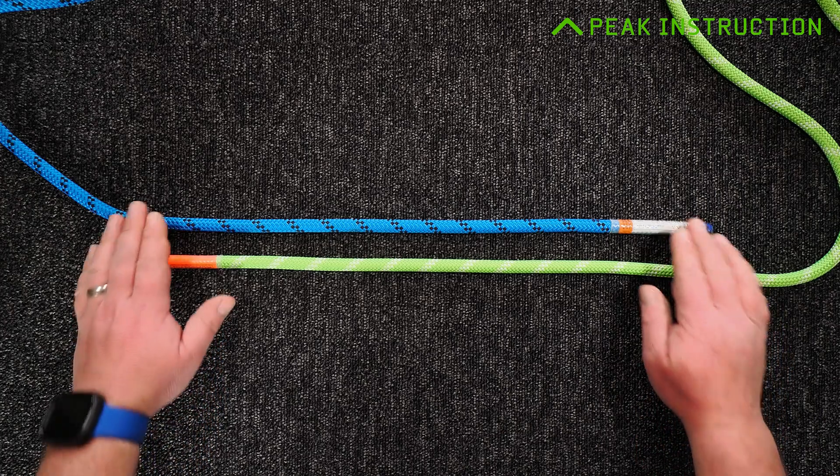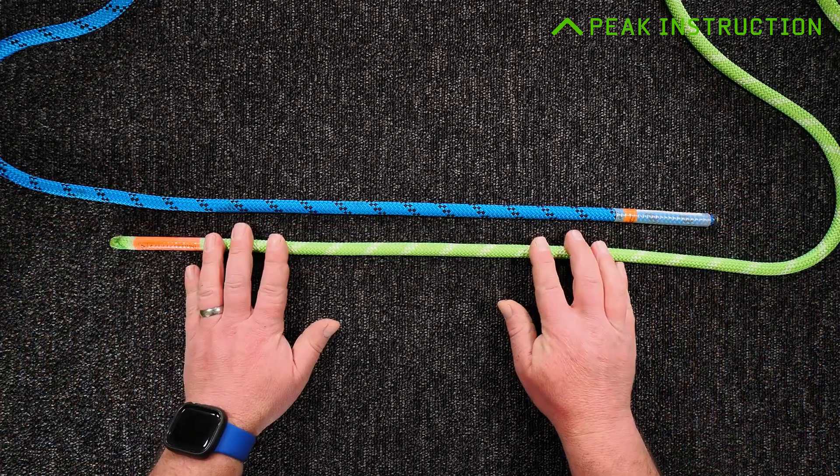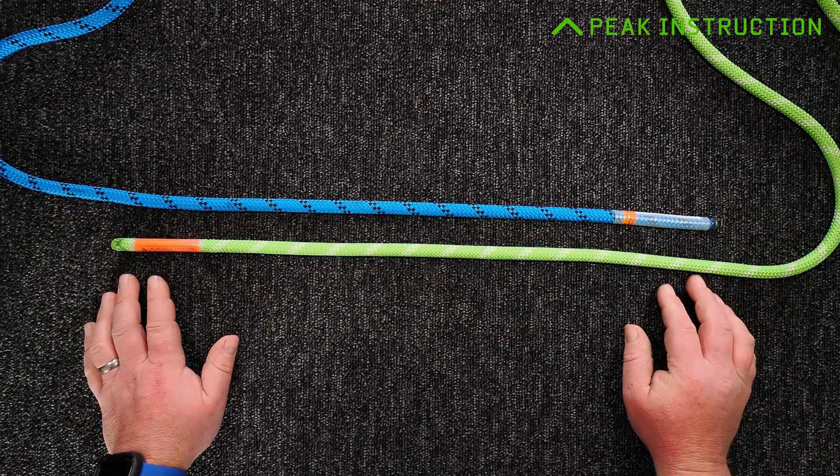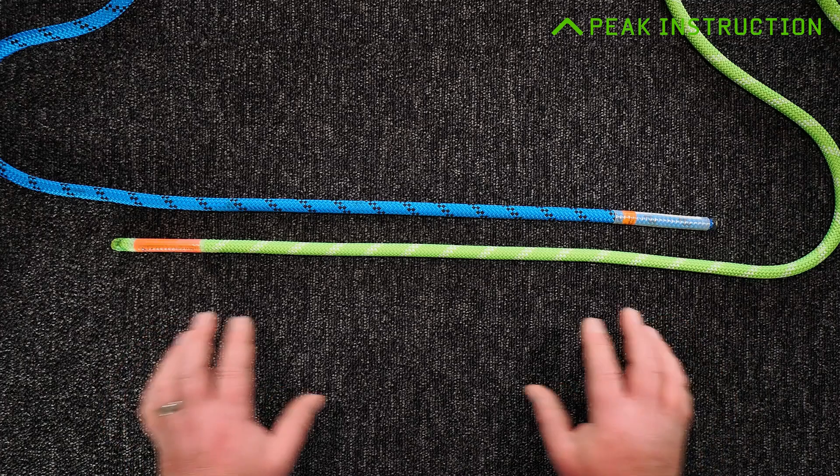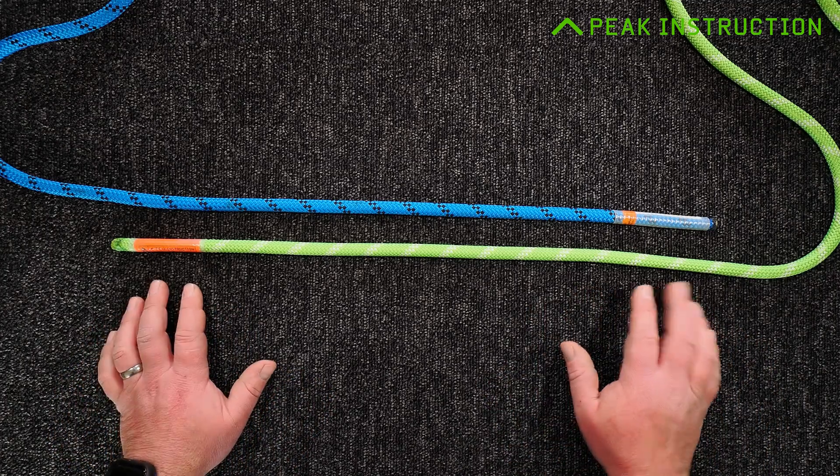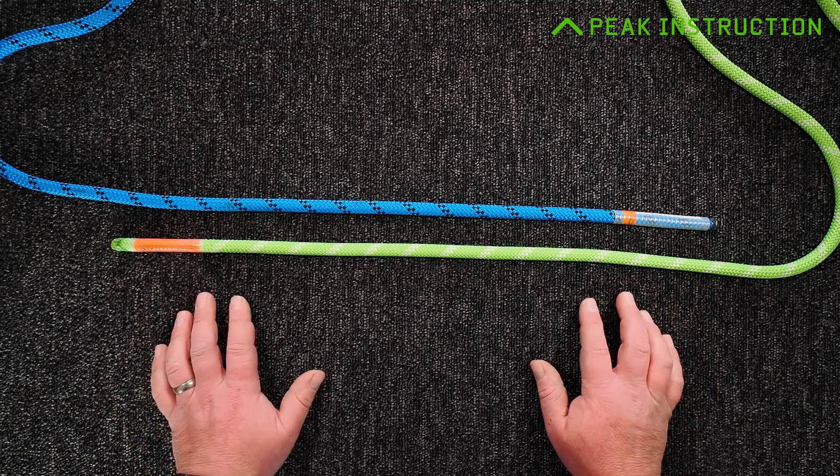You do need to know a couple of knots to do this join: the stopper knot or double overhand stopper knot as it's properly called, and the alpine butterfly. I have covered those in other videos, so if you're not familiar with how to tie those already, maybe go and watch those first and learn them.